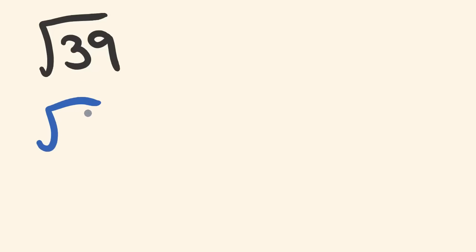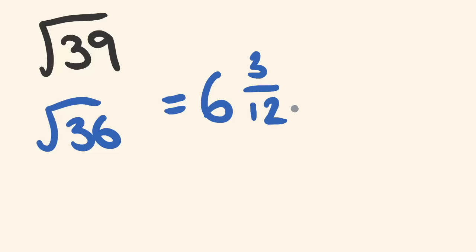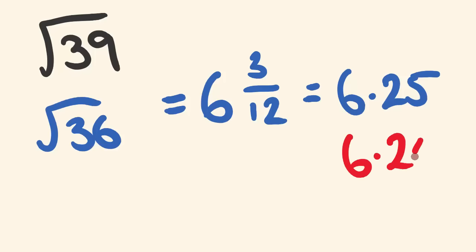Okay, so you'll probably know that the square root of 36 is 6. The difference between 39 and 36 is 3, and double of 6 is 12. So our answer is 6 and 3/12, which is 6 and a quarter, which is 6.25. The actual answer, by the way, is 6.24, so we're not too far off. Again, really really close. How'd you go with that?